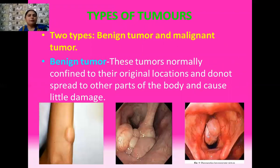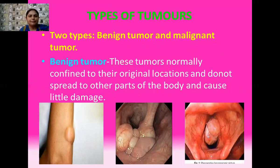Types of tumors: on the basis of the location of these tumors, we have divided them broadly into two categories — benign tumors and malignant tumors. The benign tumors normally confine themselves to a particular location; they do not spread to other parts of the body. Thus it is believed that such benign tumors cause little damage to your body.